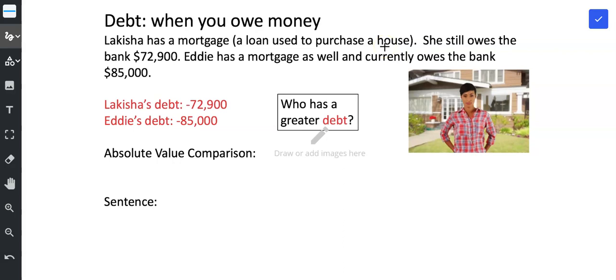Usually people don't have enough money to purchase a home, and what they do is they go to a bank and they borrow money from the bank. So they take out a loan, and that loan is called a mortgage when it's a loan for a house. So currently, Lakeisha says she still owes the bank $72,900. And then we have another person, Eddie. Eddie has a mortgage as well and currently owes the bank $85,000.